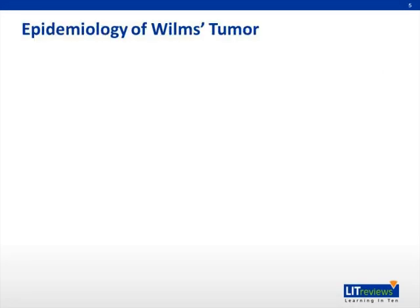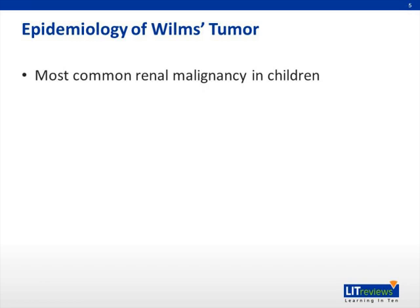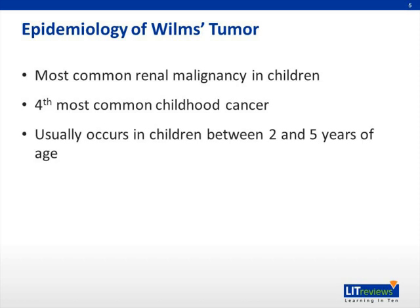Looking at the epidemiology of Wilms tumor, we know that Wilms is the most common renal malignancy in children, and it's also the fourth most common childhood cancer. It occurs at a young age, usually in children between the ages of two and five, and very rarely occurs in adults. Its incidence per year is about eight cases per one million, and in the United States about 460 cases are diagnosed every year.